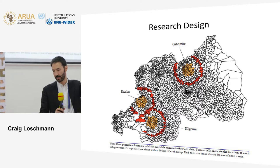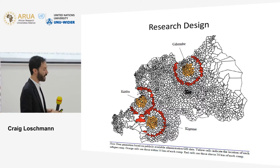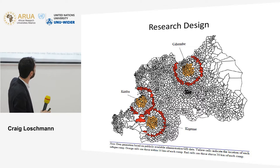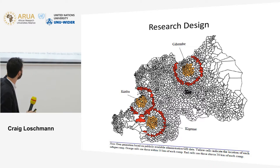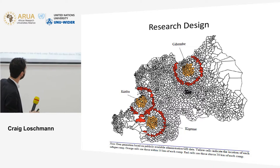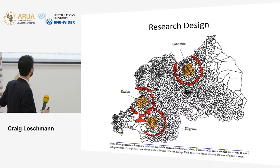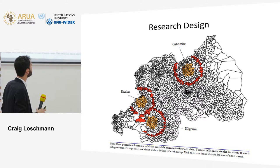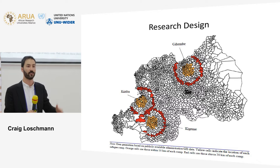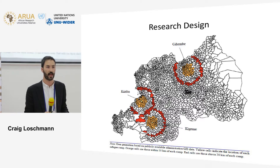For our research design, here's a map at the administrative cell level showing where the camps are located within the country. We surveyed within each of the three camps — Gahembe in the north, Gihembe in the south, and Kiziba in the west. In the orange areas within 10 kilometers of each camp, we randomly surveyed households. We also randomly surveyed households in communities beyond 20 kilometers, creating a counterfactual scenario to compare households within 10 kilometers versus those outside 10 kilometers of each camp.